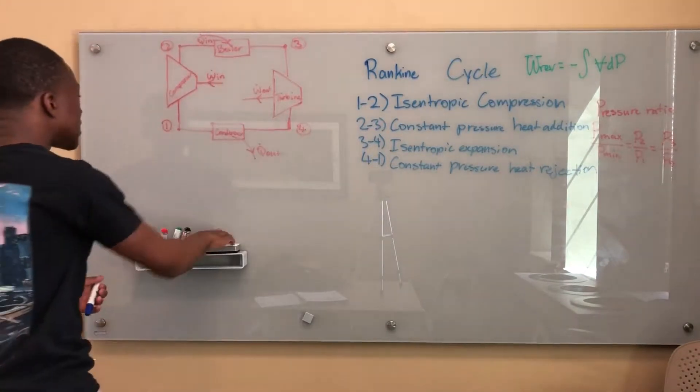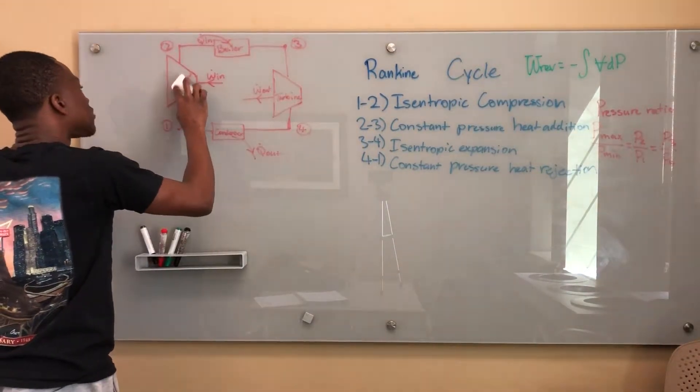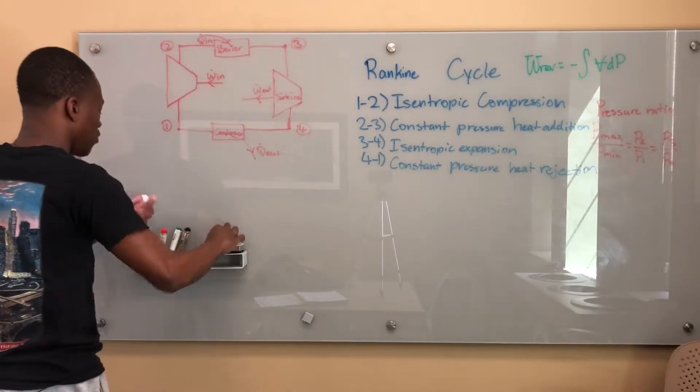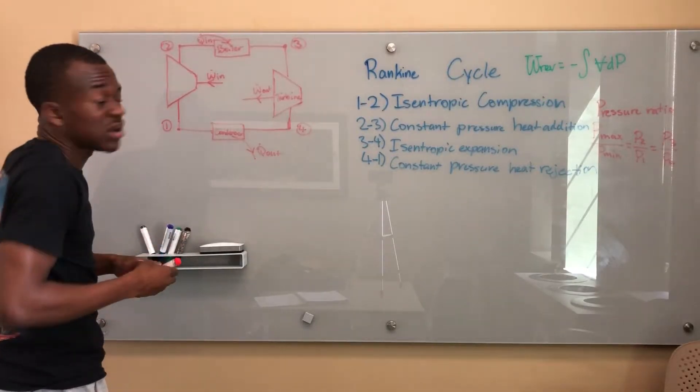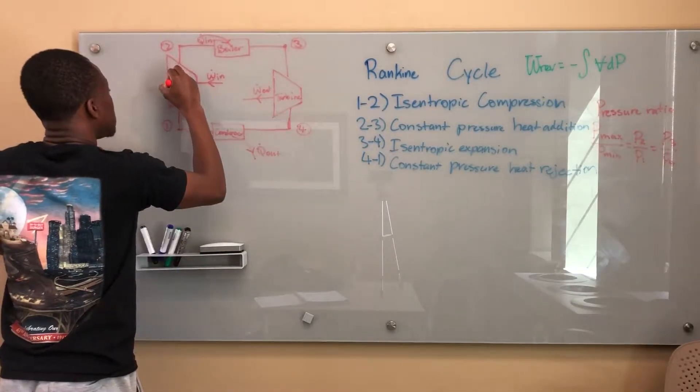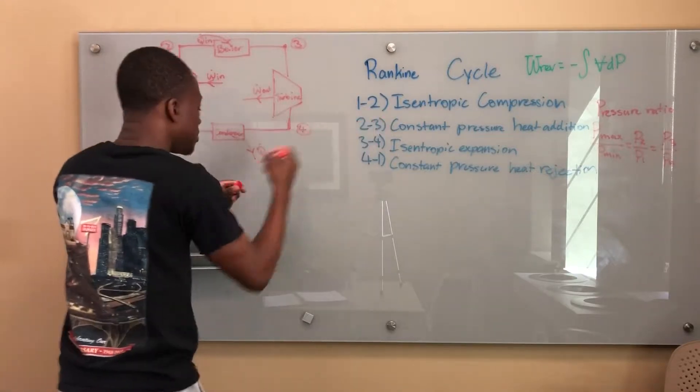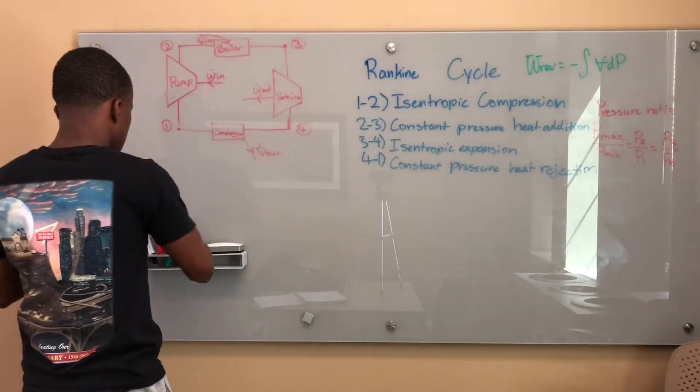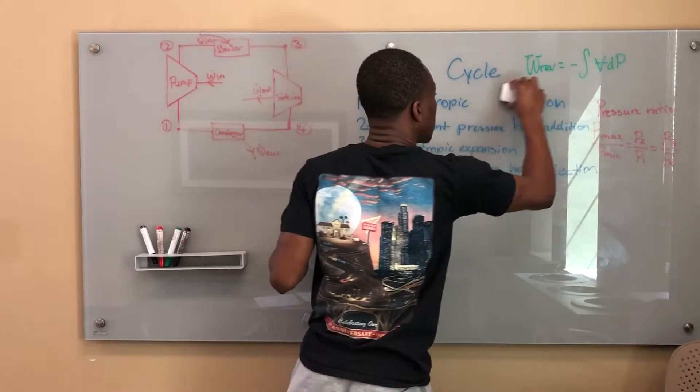However, this compressor becomes a pump, since we're dealing with water. When a compressor deals with water, we just call it a pump, right? But it's still a compressor. So this becomes isentropic pumping.